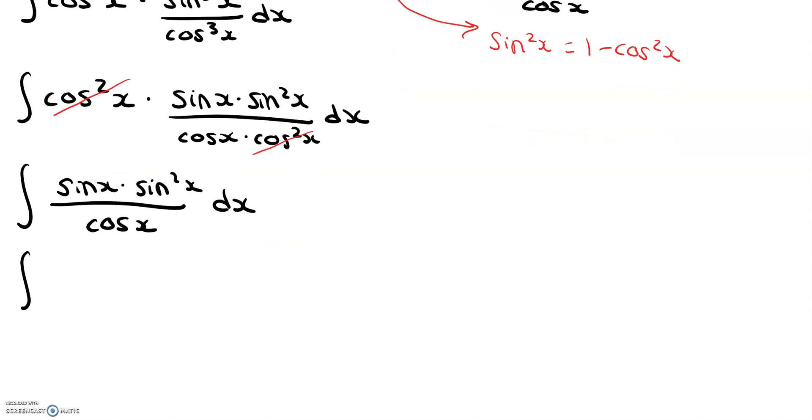Okay, so sine x times 1 minus cosine squared x, all divided by cosine x dx.